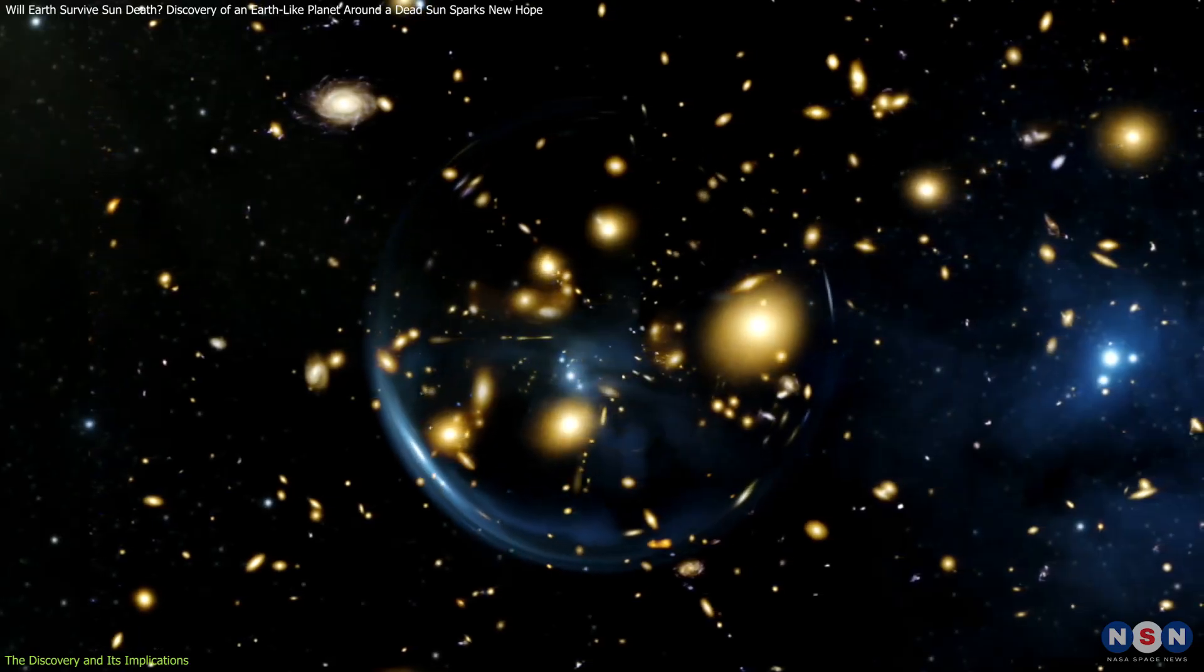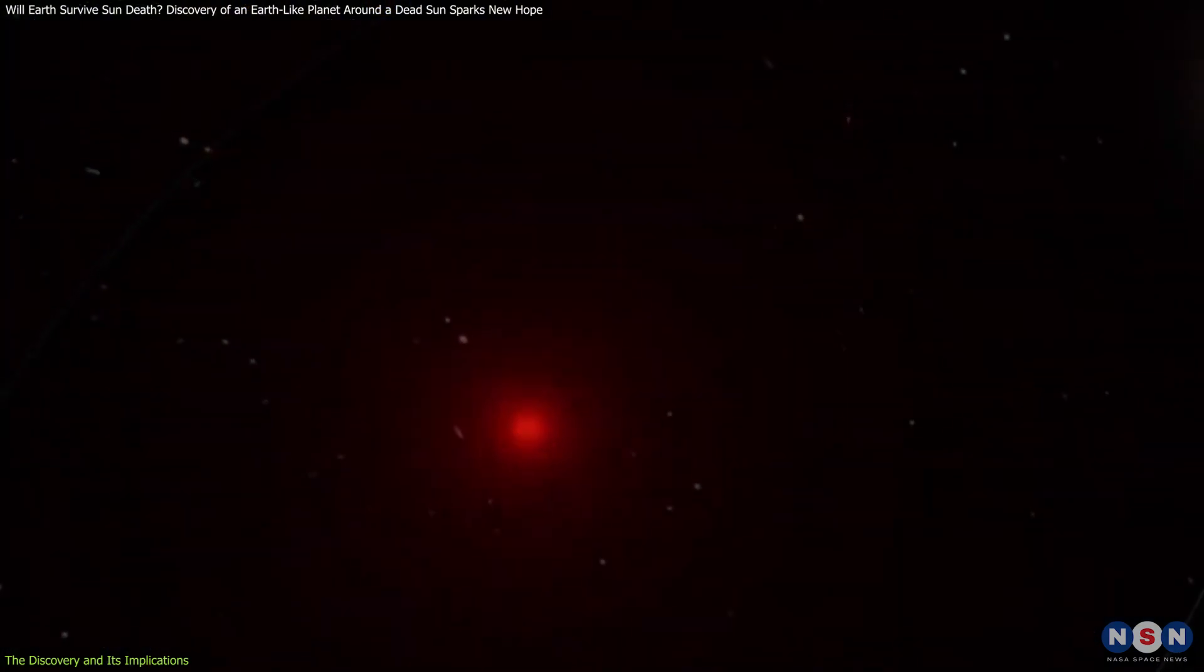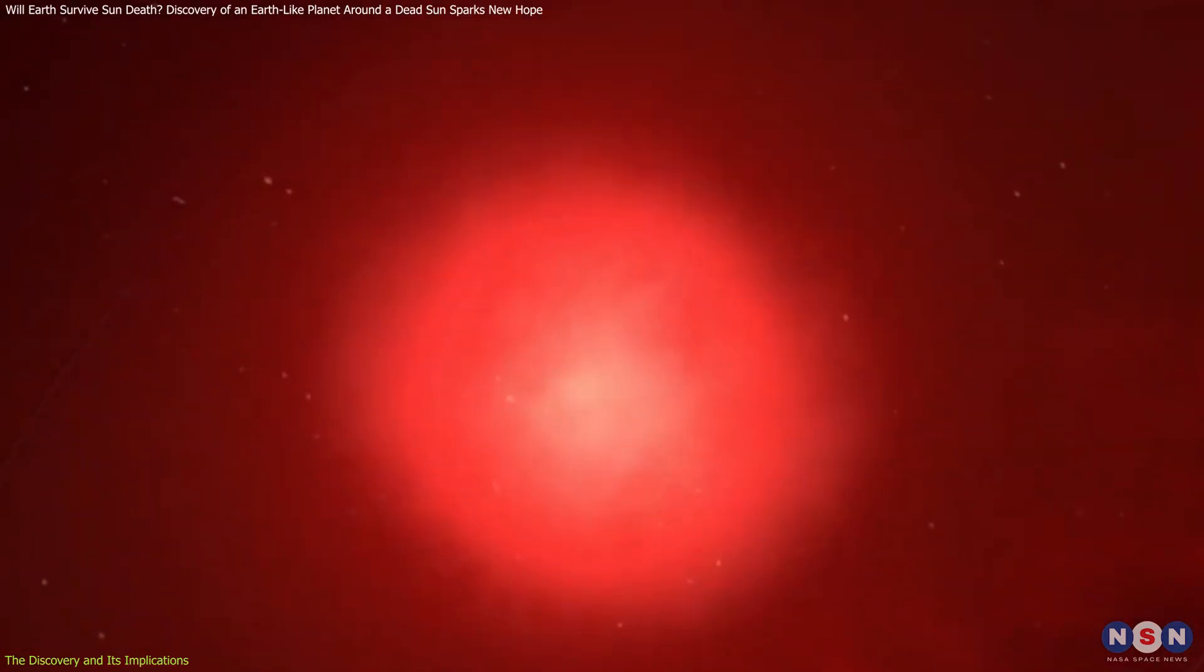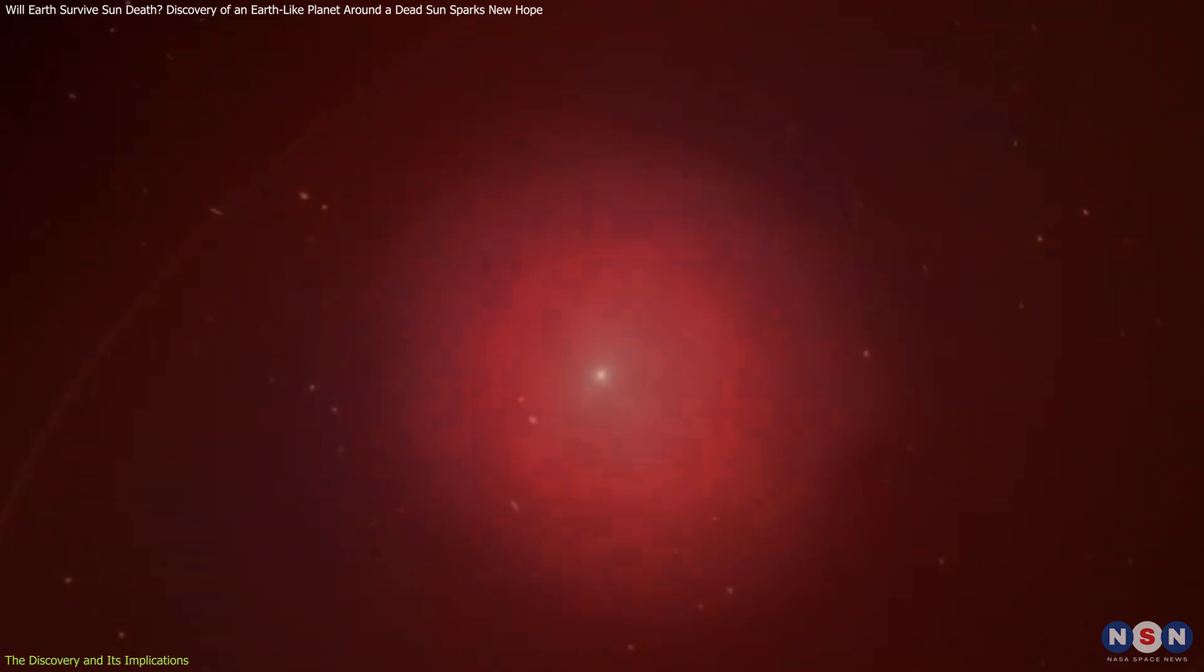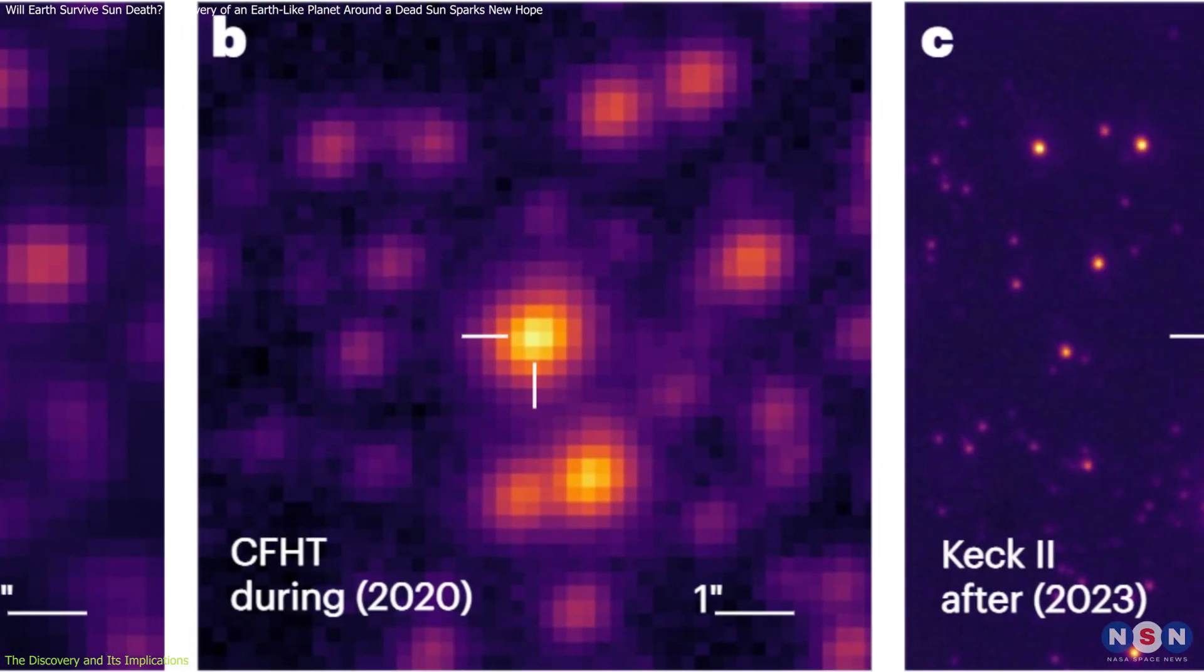When stars like our Sun exhaust their nuclear fuel, they swell into red giants, shedding their outer layers before collapsing into dense, faint white dwarfs. This process unfolded in the system we're examining today.